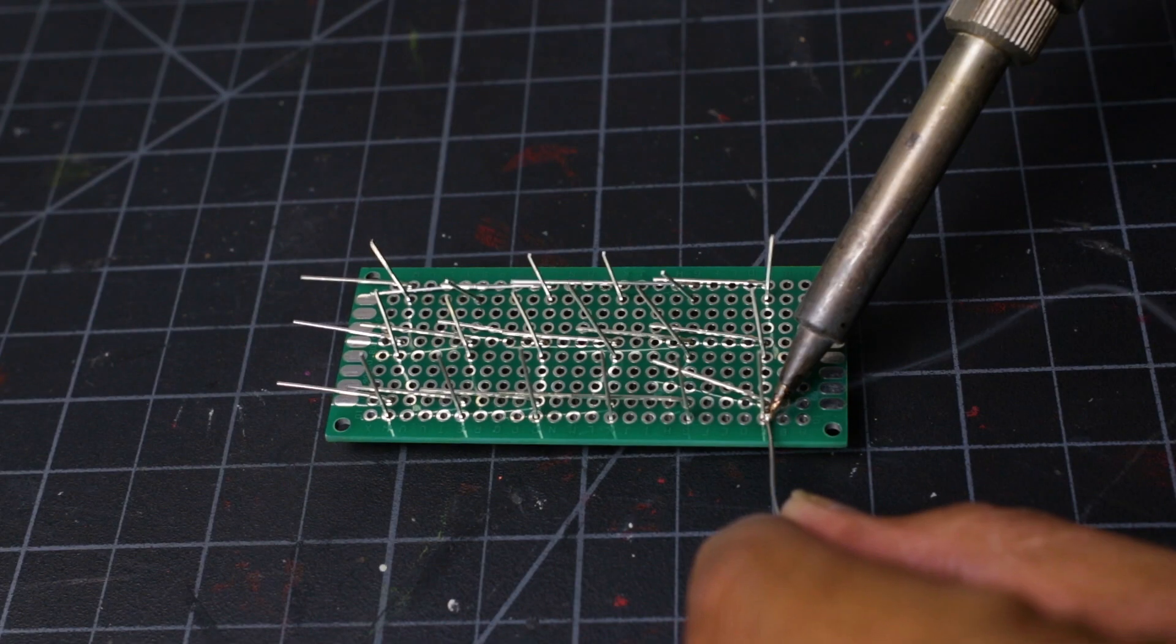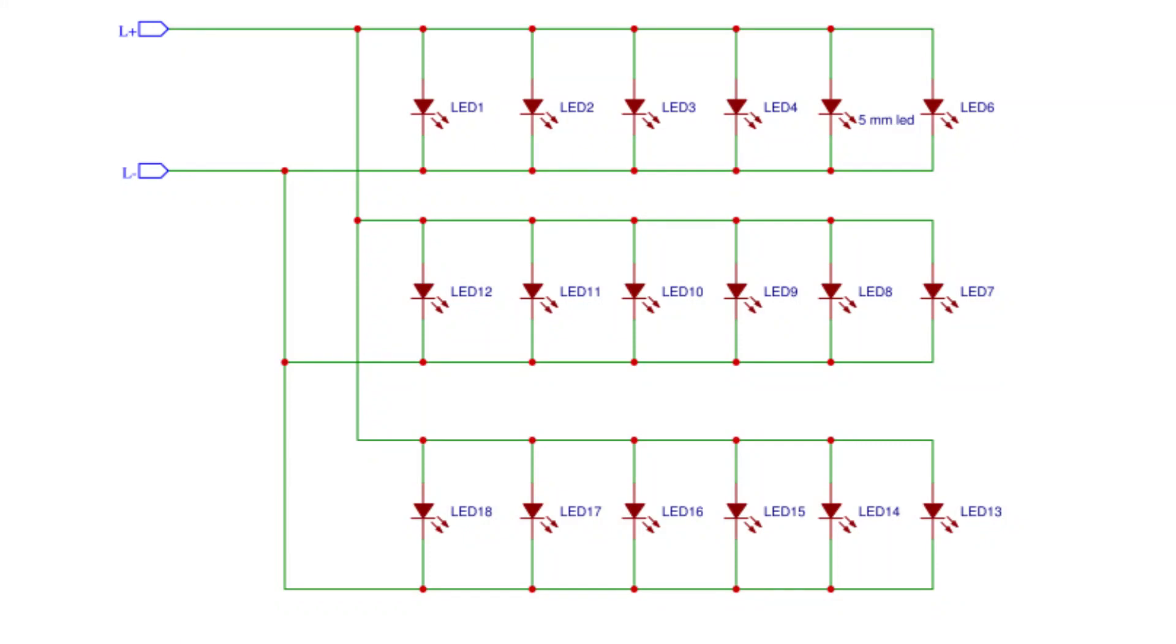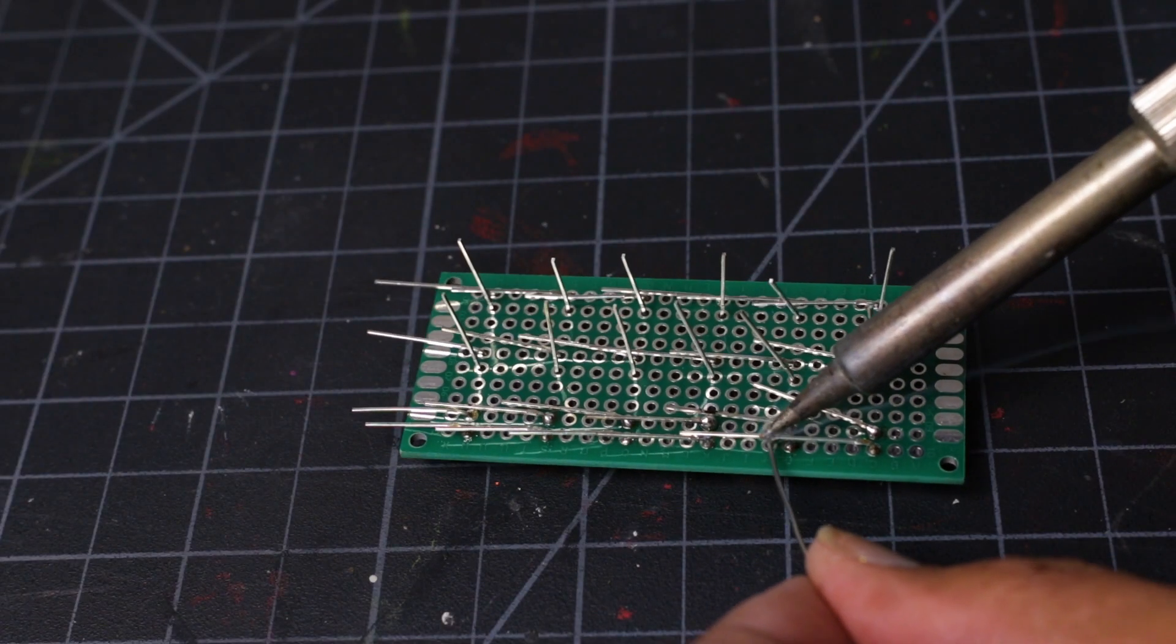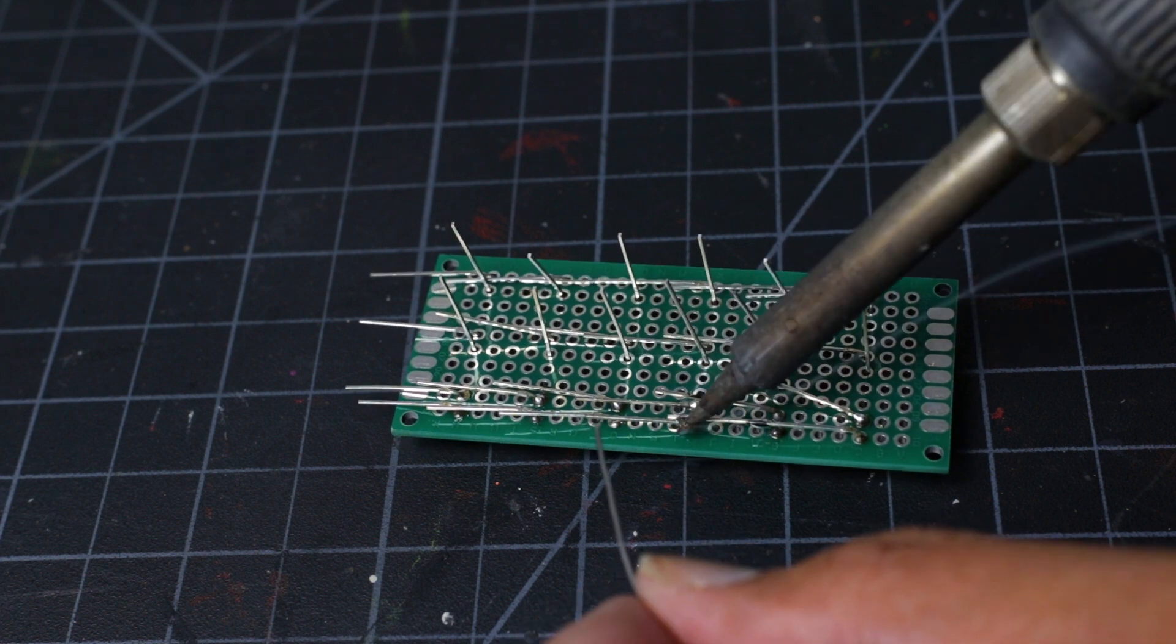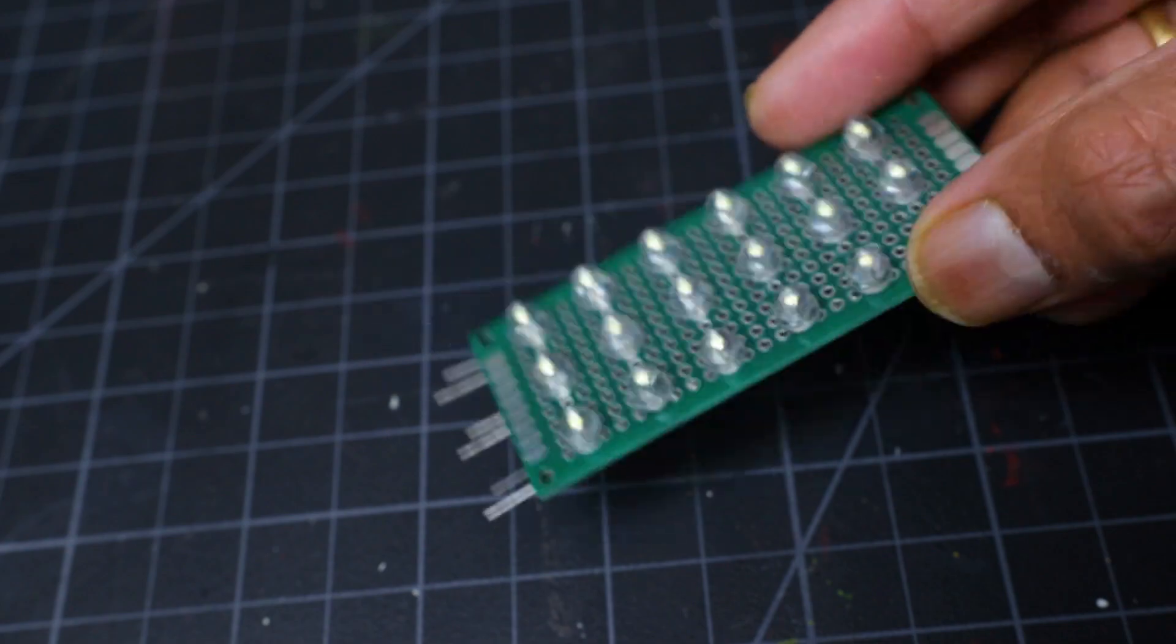After inserting, solder all the LEDs. Connect the LED terminal according to the schematic diagram. The schematic diagram is pretty simple. Just connect all the LED positive terminals together and negative terminals together.